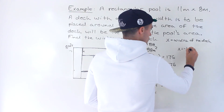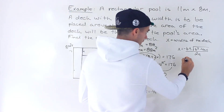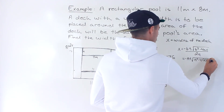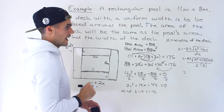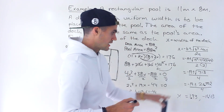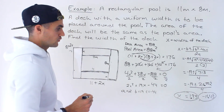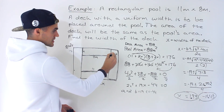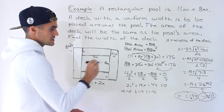Using the quadratic formula x = (−b ± √(b² − 4ac)) / 2a, we plug in: (−19 ± √(19² − 4·2·(−44))) / (2·2). The discriminant works out to 713, and √713 ≈ 26.702. This gives two solutions: x ≈ 1.93 and x ≈ −11.43. Since x represents the width of the deck, the negative solution is not viable, so x = 1.93.